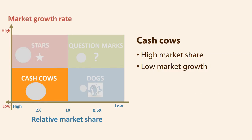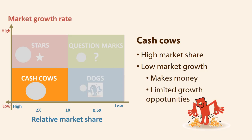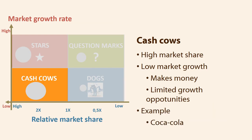The cash cow is a product characterized by having a relatively high market share in a market with low growth. It is a product that everyone knows and buys — a popular product. For the company, the cash cow is nice to have, as it quietly makes money without having to spend as much effort in sales and marketing compared to question marks and stars. However, growth opportunities are limited. An example is Coca-Cola, one of the best known brands in the world.